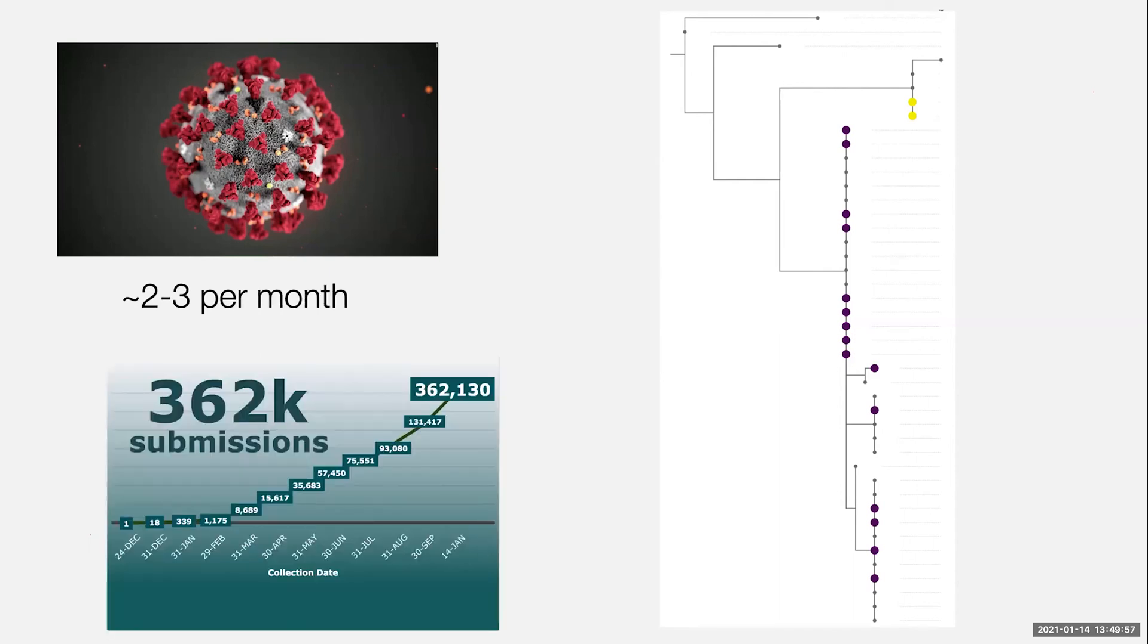And when each mutation is more important, it's very difficult to know where they should go. And as I said, there's now 362,000 submissions as of this morning. That is an order of magnitude larger than anything any of us have worked with before. So most of the tools that we have as well are not really designed to work with this volume of data.